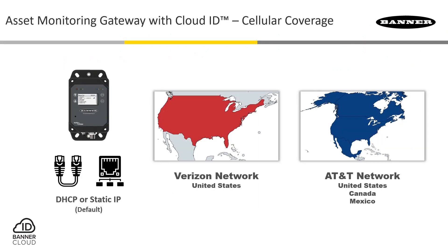The monitoring gateways for Cloud ID systems are by default intended to communicate to our cloud via Ethernet communication. However, we have embedded cellular modems within these devices to ensure that IT complications can be overcome if they arise on the first day.